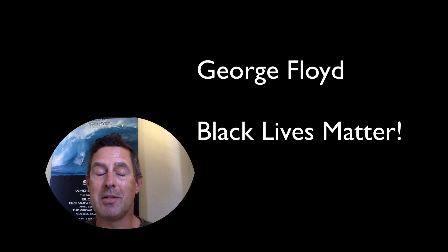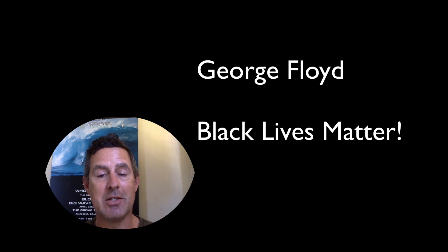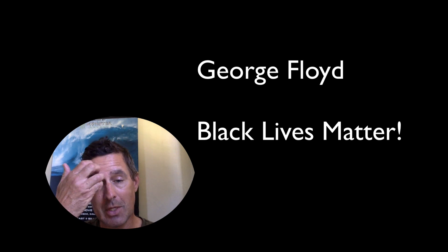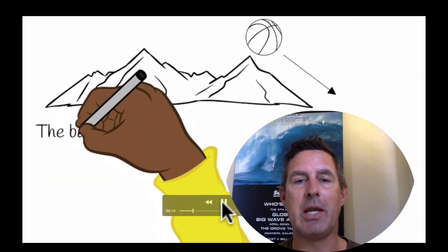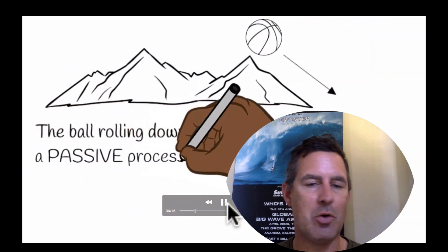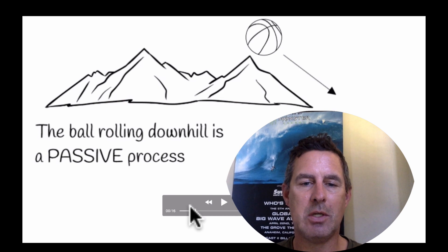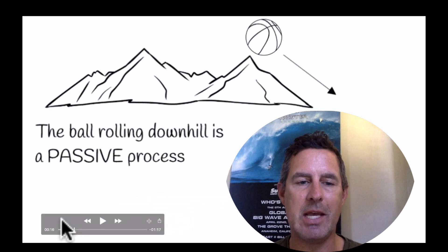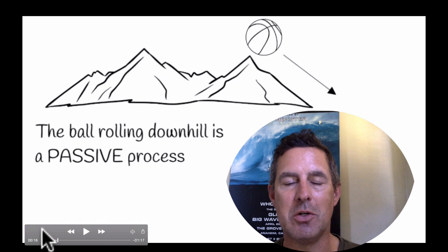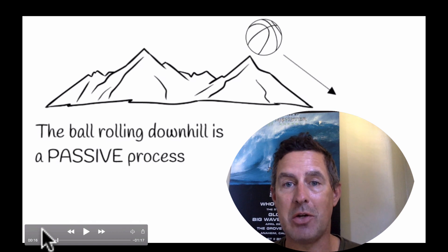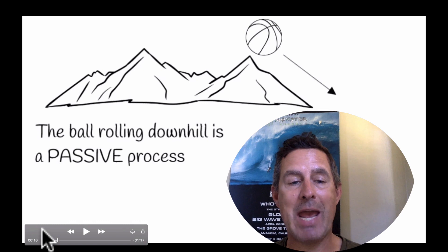So without further ado, we're going to talk about something less important than that, and that is ion gradients. If we look at this slide right here, this is showing a ball rolling downhill. The whole importance I'm trying to show with this slide is that the ball will move passively downhill from high to low — from an area of higher elevation to an area of low elevation. That is a passive process.